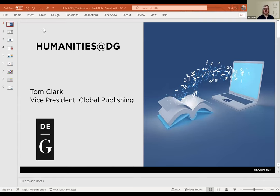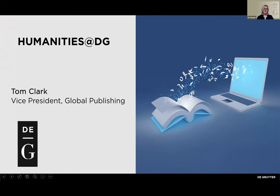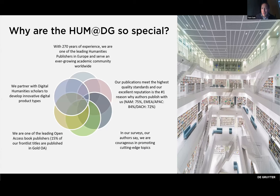Hi everybody. I'm Tom Clark, I'm responsible for publishing at De Gruyter. As Daniel covered science, I will cover our humanities program. Humanities is our sort of bedrock — it's where our reputation is based, covering quite a few subject areas. We've been doing it for nigh on 270 years. Digital humanities is part of our portfolio, where we're really trying to enhance the beyond-the-book approach, meaning the book is always at the centre. Open access is a good part of what we do — 15% of our front-list titles are published in gold. Our ongoing author surveys are promoting us as courageous in tackling cutting-edge topics before they're formalised into stable subjects.